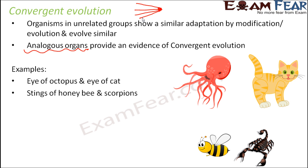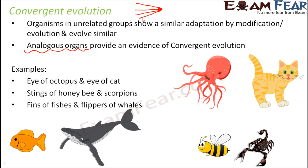Let's look at more examples: the stings of honeybees and scorpions; fins of fishes and flippers of whales. If you look at the fins of fishes and the flippers of whales, structurally they are definitely not the same — there is a huge difference in their structure and origin — but both fins and flippers help the respective fish and whale to swim in water, so their function is the same.